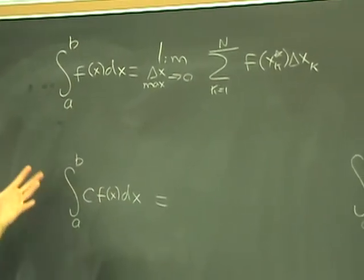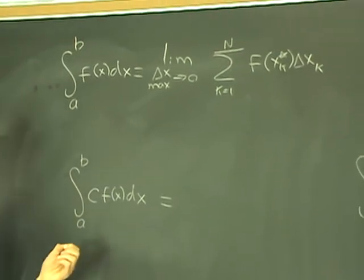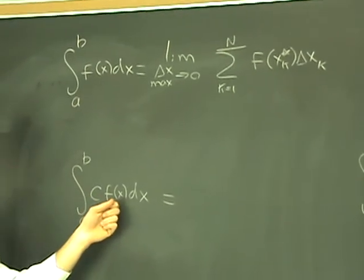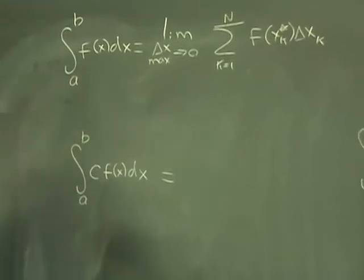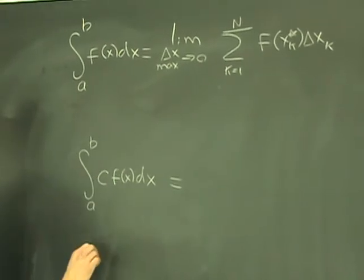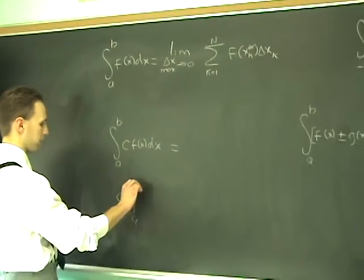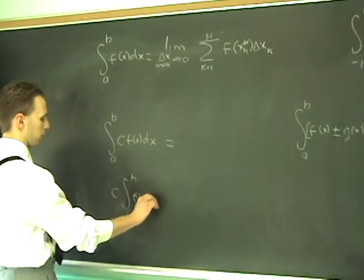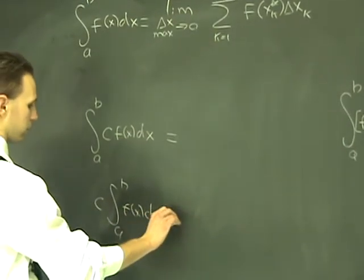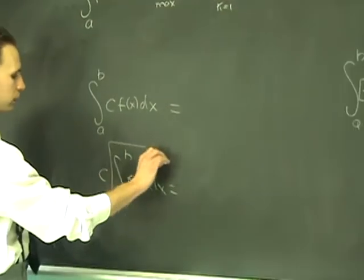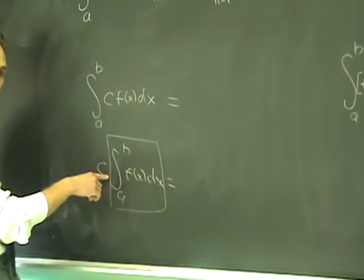For example, if you do a definite integral of a constant times a function on some interval, then you can factor that c out. The constant will come out, and you can just do the definite integral of the function by itself and then multiply that by that constant.